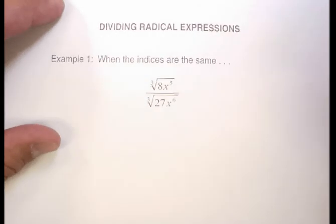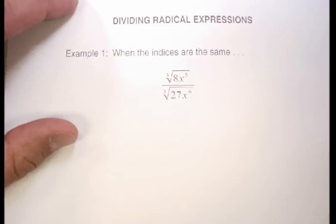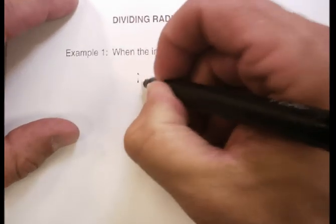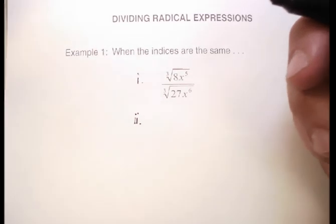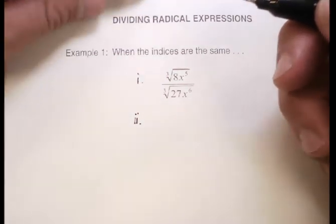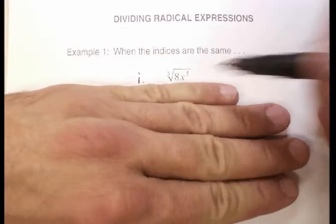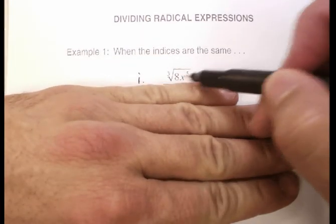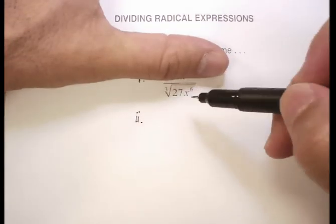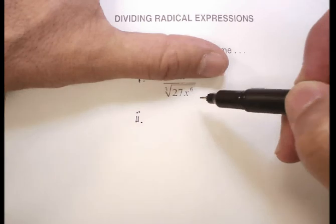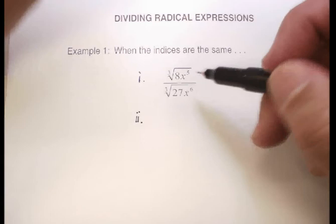Let's go through those, as there are slightly different things you have to do for each. One of my favorite sayings is that difficult problems are just a bunch of simple ones stacked up together. In a sense, what we have here are two different problems: the top part, the cube root of 8x to the fifth, and the denominator, the cube root of 27x to the sixth.